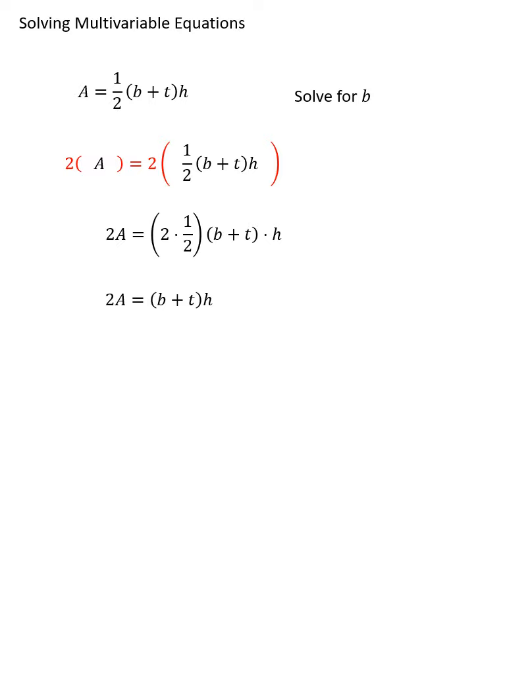Now we still aren't done solving for b. We have to get the b by itself. I could distribute the h on the right side of the parentheses there, but it seems more efficient at this point to divide both sides by h. Because therefore, on the right side of the equation, I can then do h divided by h is one.